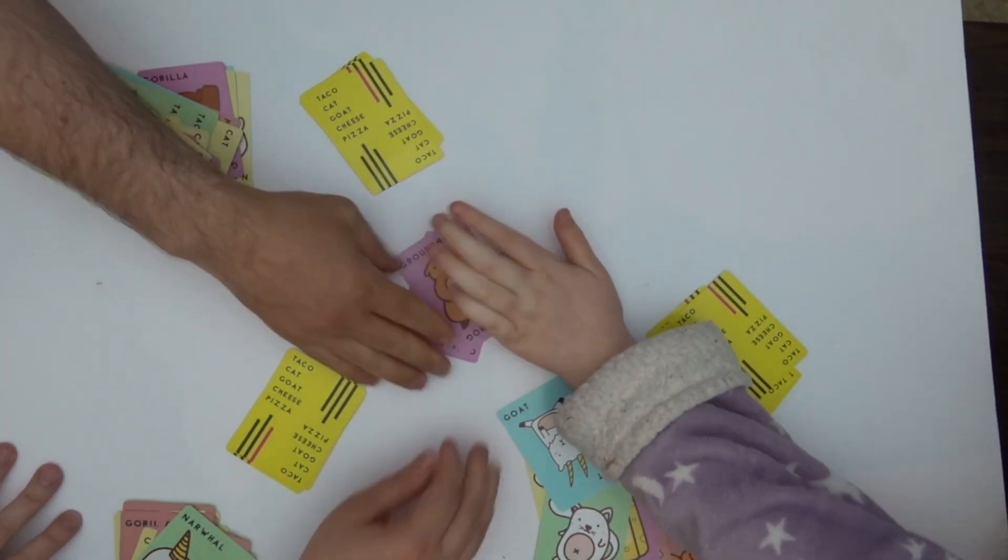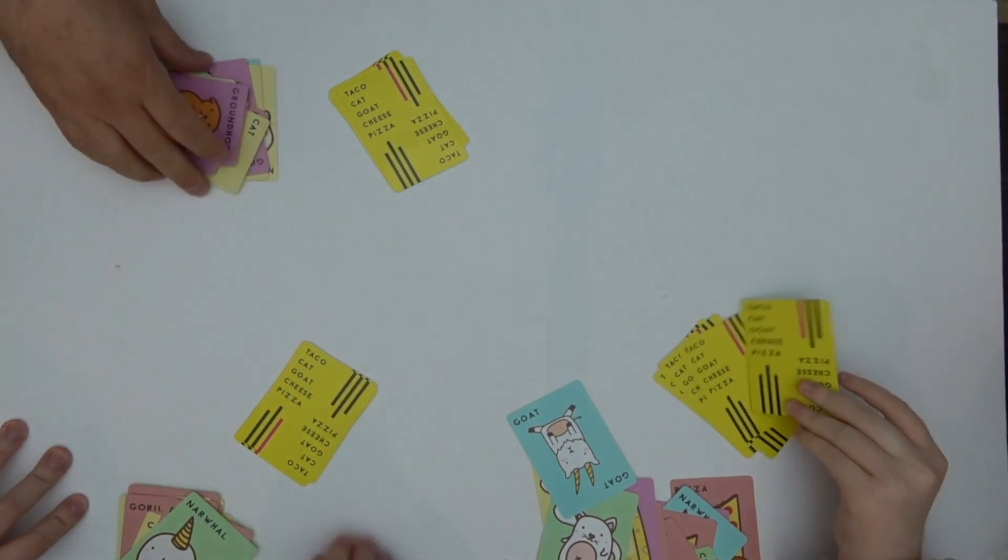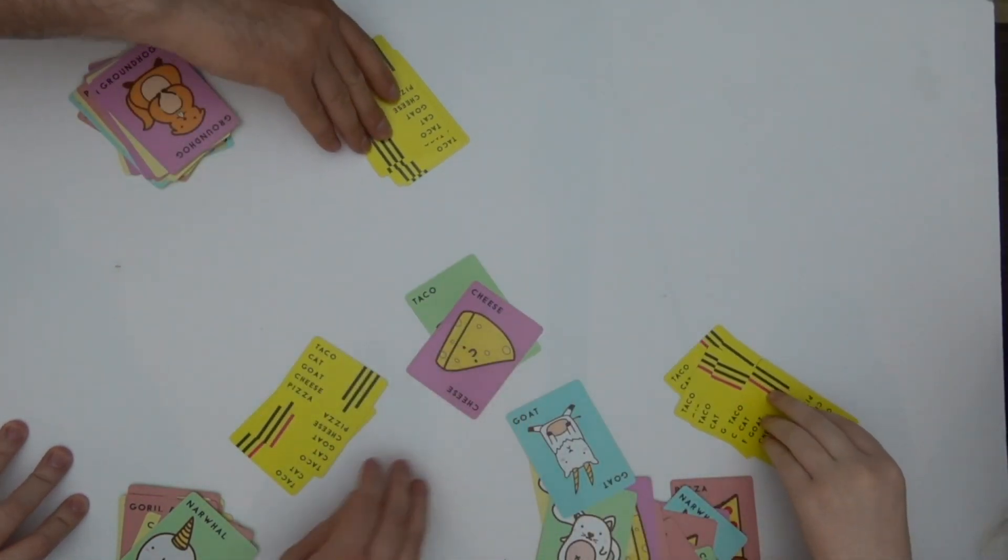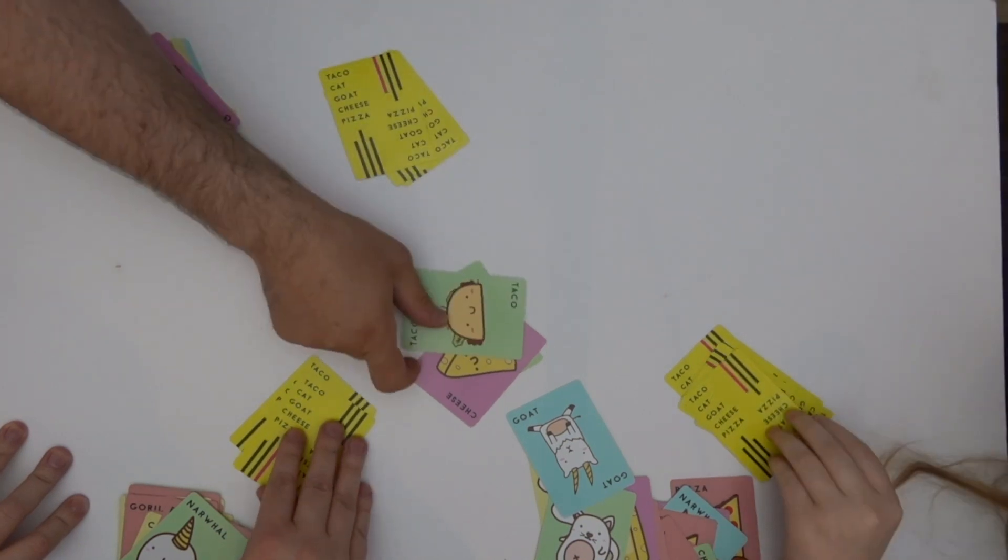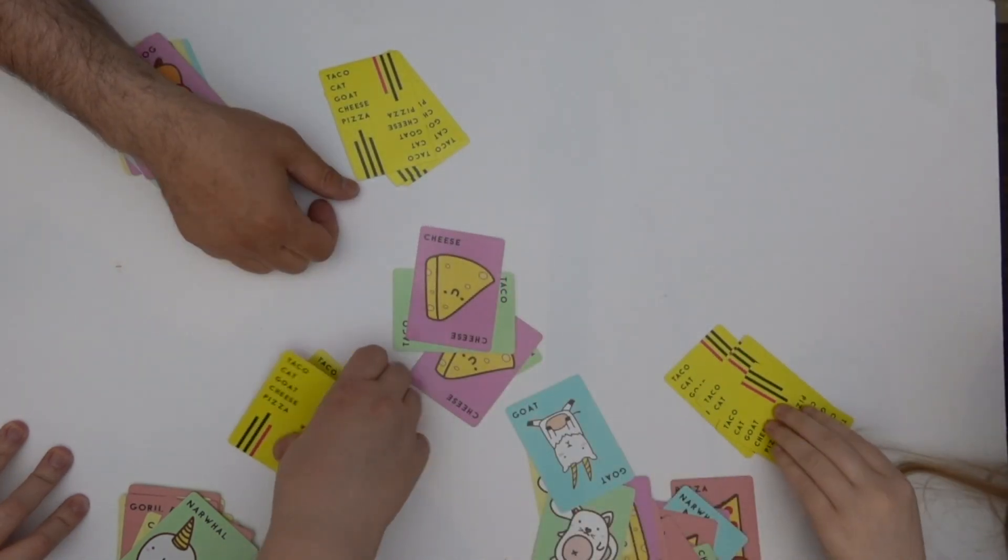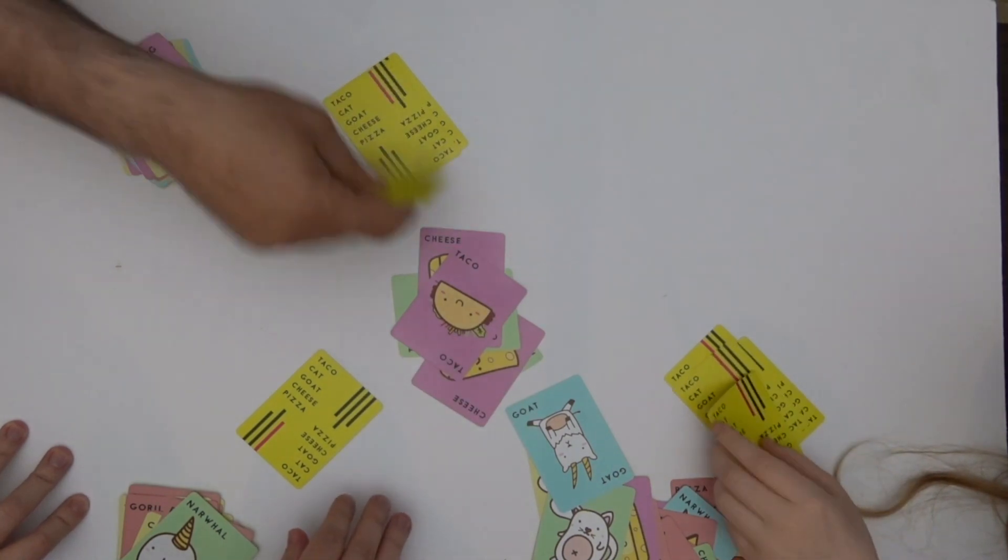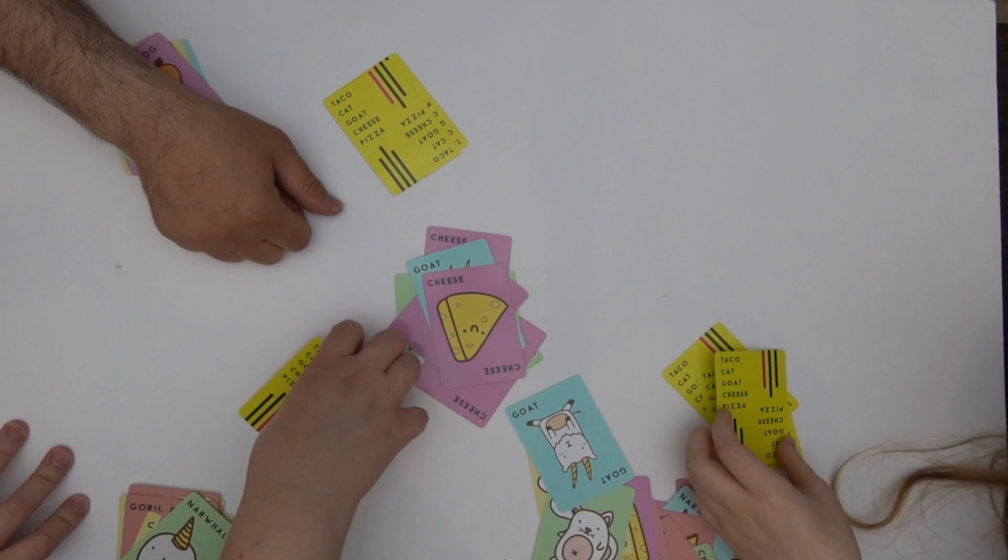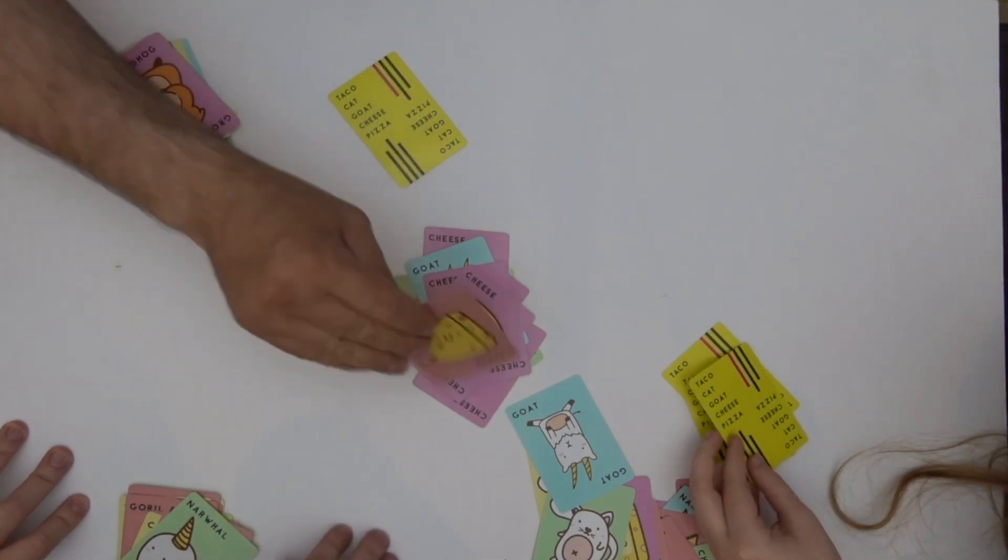Cheese! Shoot! Oh no, we punched the camera. This is such a physical game. We're not making allotment for the ring light. Goat, cheese. Pizza, taco, cat, goat.